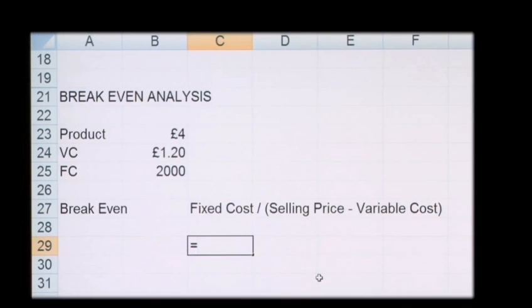So in this example, it'd be £2,000 divided by your £4 less your £1.20.